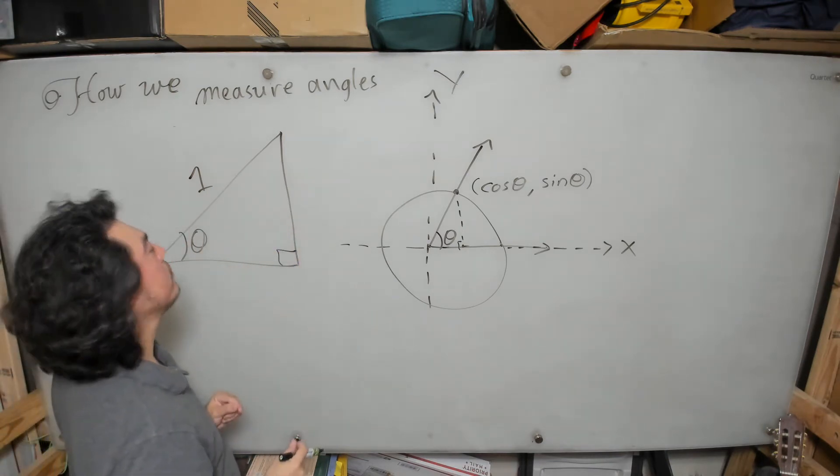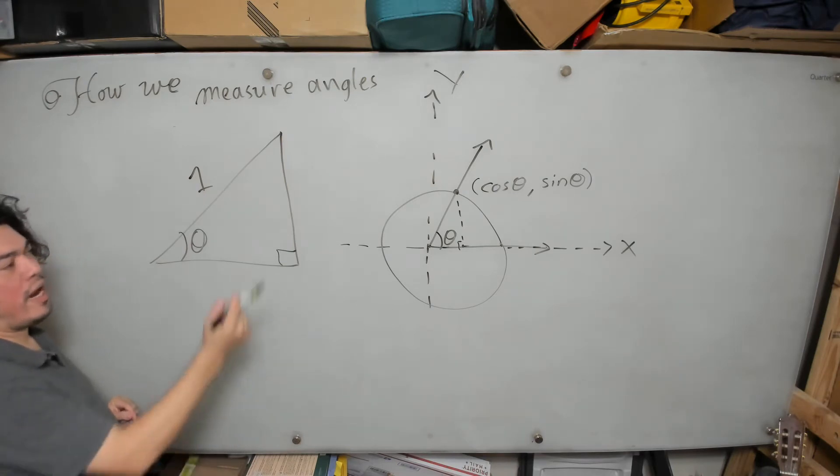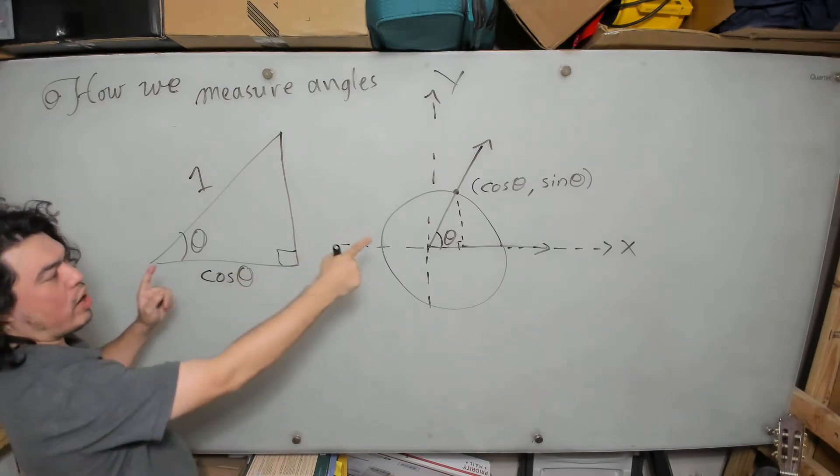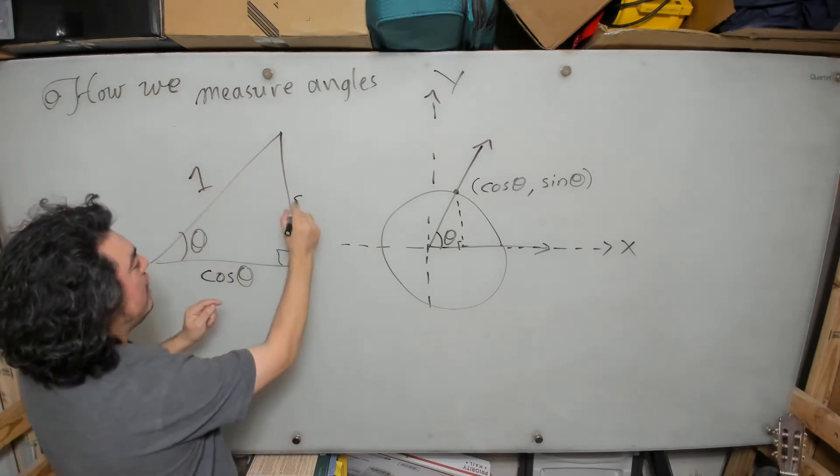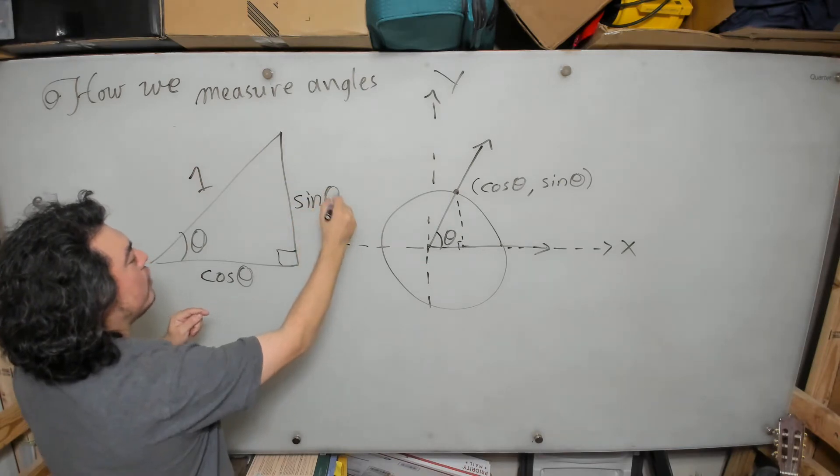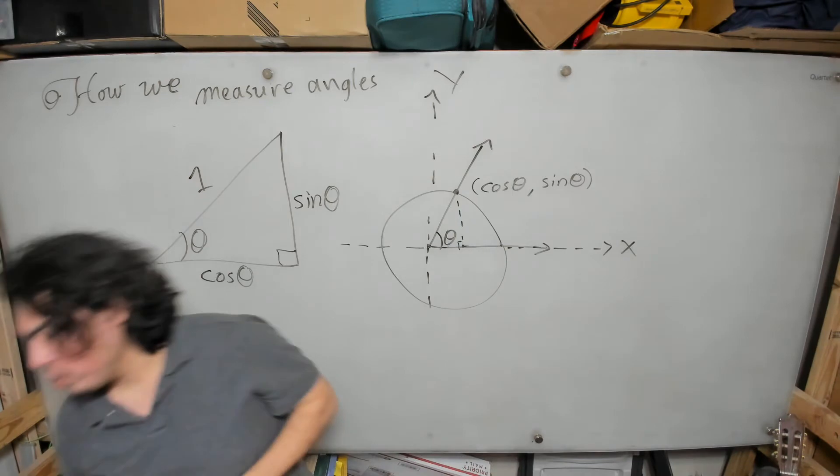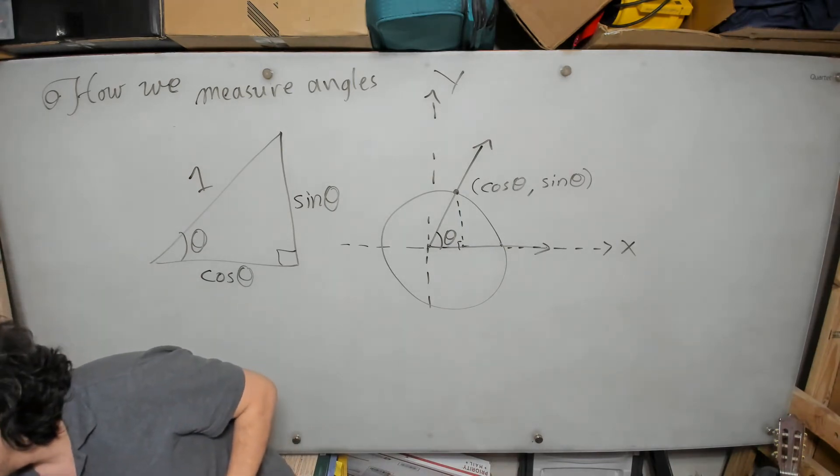We know that this hypotenuse has length one, again because it's a unit circle. This is just a magnification of that picture; it's like I'm looking at it with a magnifying glass. The x-coordinate is cosine theta, so that means the length of this side is cosine theta, and the y-coordinate is sine theta, so that means this height has length sine theta.